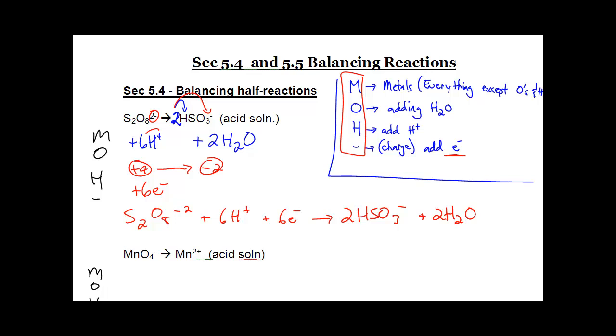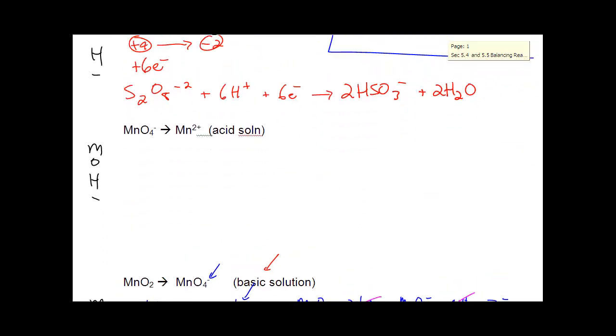Okay, let's try it one more time. So, balance everything except O's and H's. Well, I've got one Mn and one Mn. They're done. I've got four O's on the left. I need to put four H2O's on the right. I've got to balance my H's. I've got zero on the left and I've got four times two is eight. So, I need eight H+.